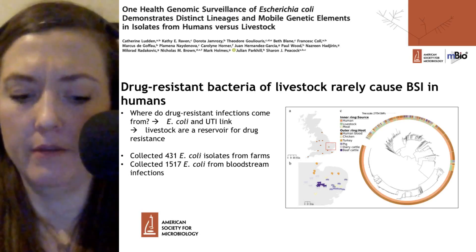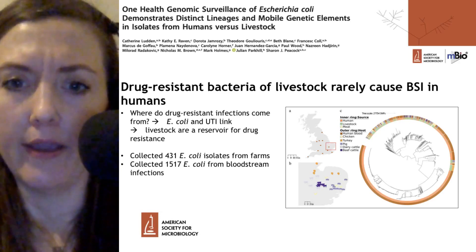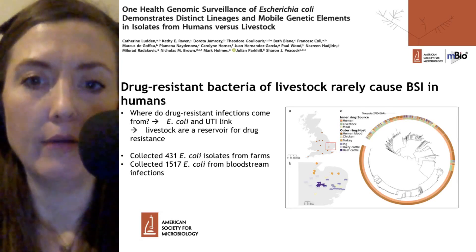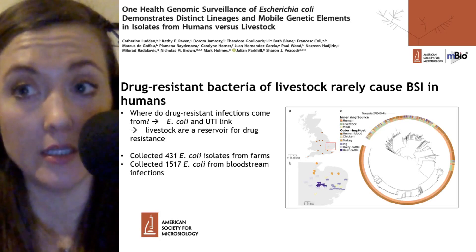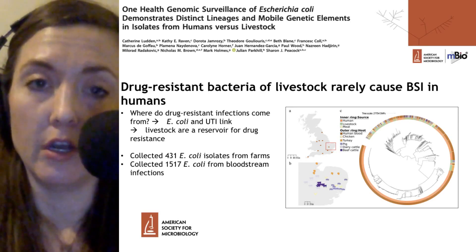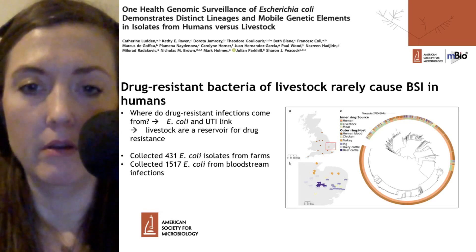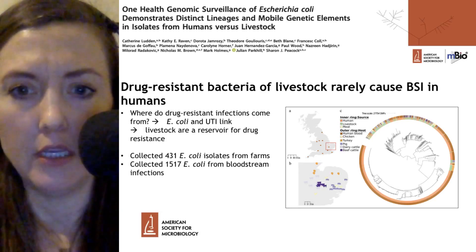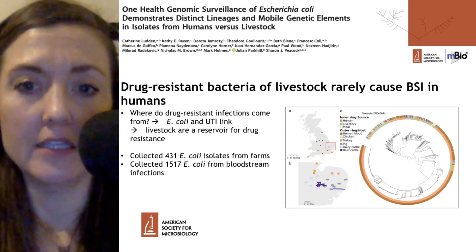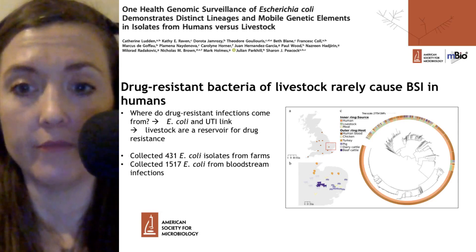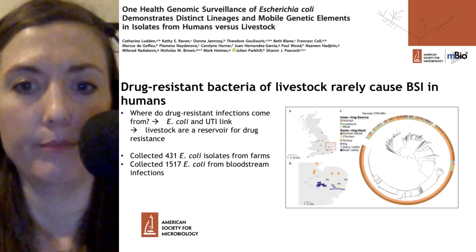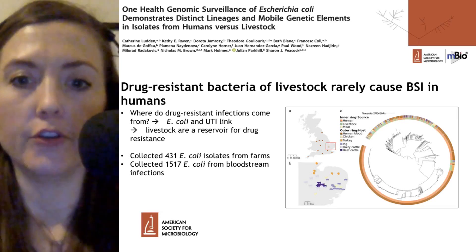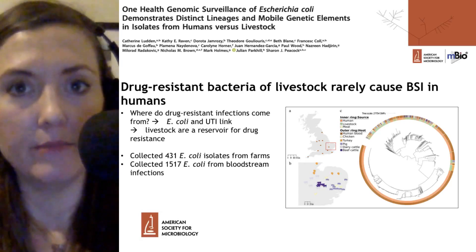They looked at the relatedness of these different isolates, graphed in a figure where the outside ring shows the source of the isolate and the inside ring shows the association of that particular isolate — generally classified as a human strain, livestock strain, or meat strain. By and large, the human blood strains tend to come from humans, whereas there's a lot more interaction between the different livestock strains. So it's more likely that turkeys and chickens on the same farm might be passing isolates between one another.